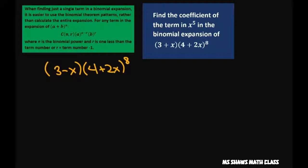So we have 3 minus x times 4 plus 2x to the eighth. And the first thing I want to do is distribute this. This is really 3 times 4 plus 2x to the eighth, plus x times 4 plus 2x to the eighth.